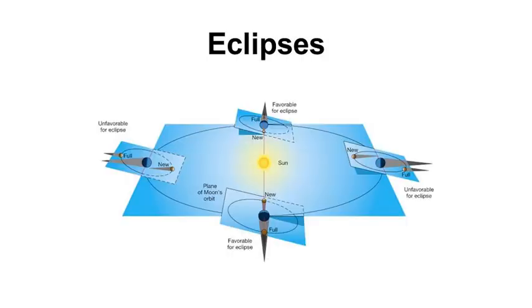An eclipse occurs when one heavenly body, such as a moon or a planet, moves into the shadow of another heavenly body. The earth orbits the sun on an imaginary plane called the ecliptic, and the moon orbits the earth also on an imaginary plane, which is tilted about 5 degrees from the ecliptic.